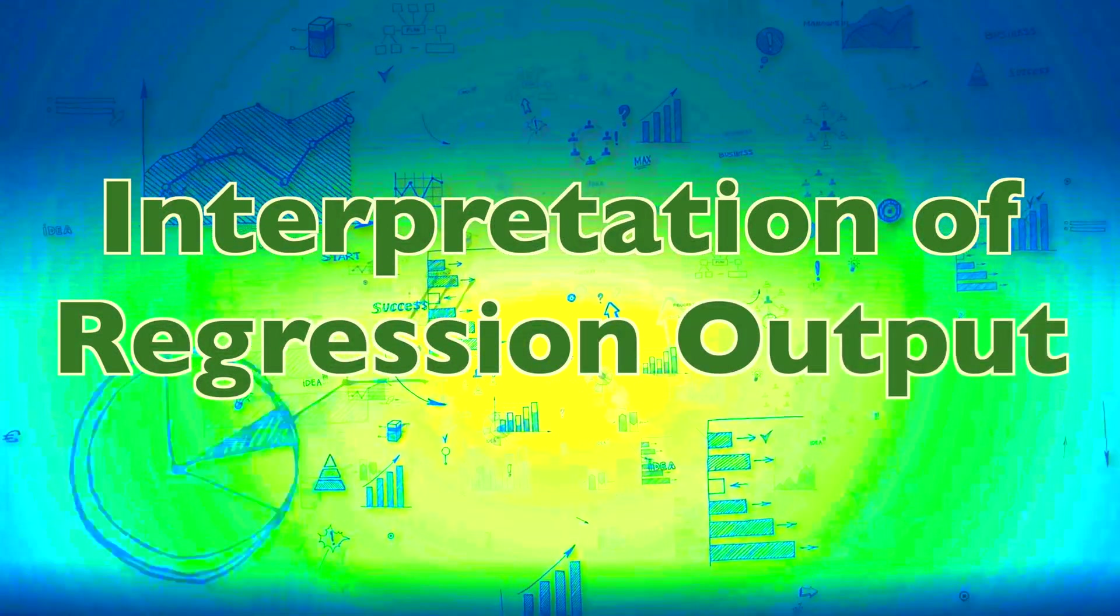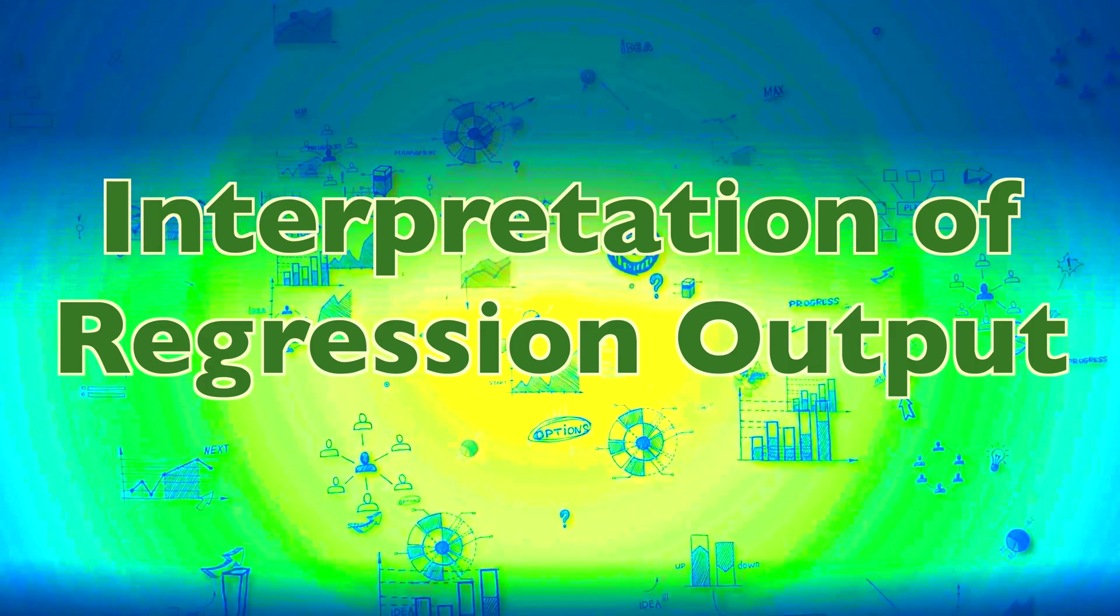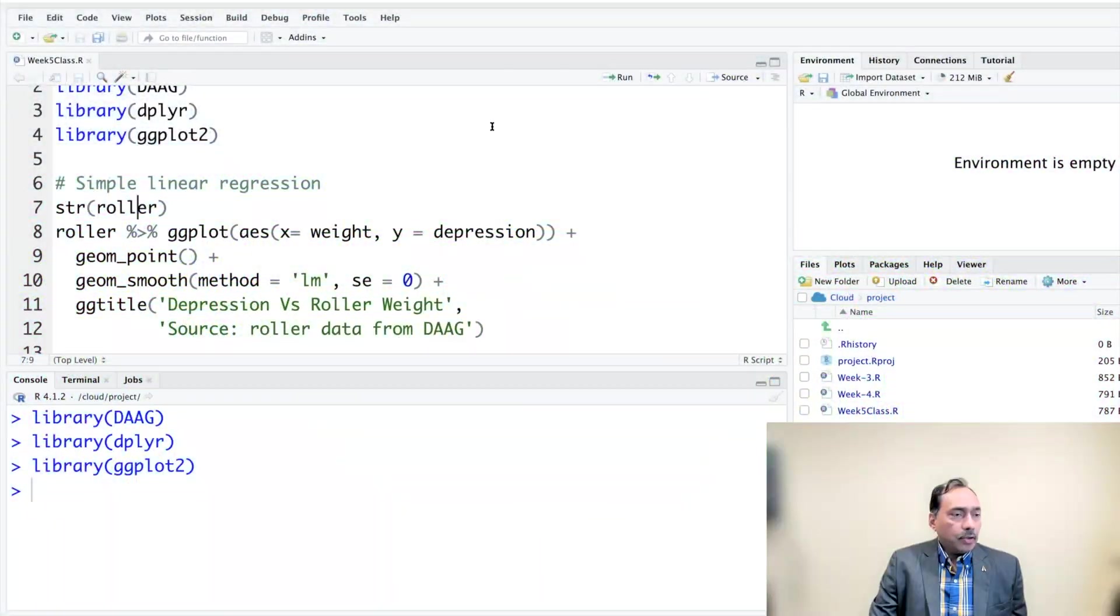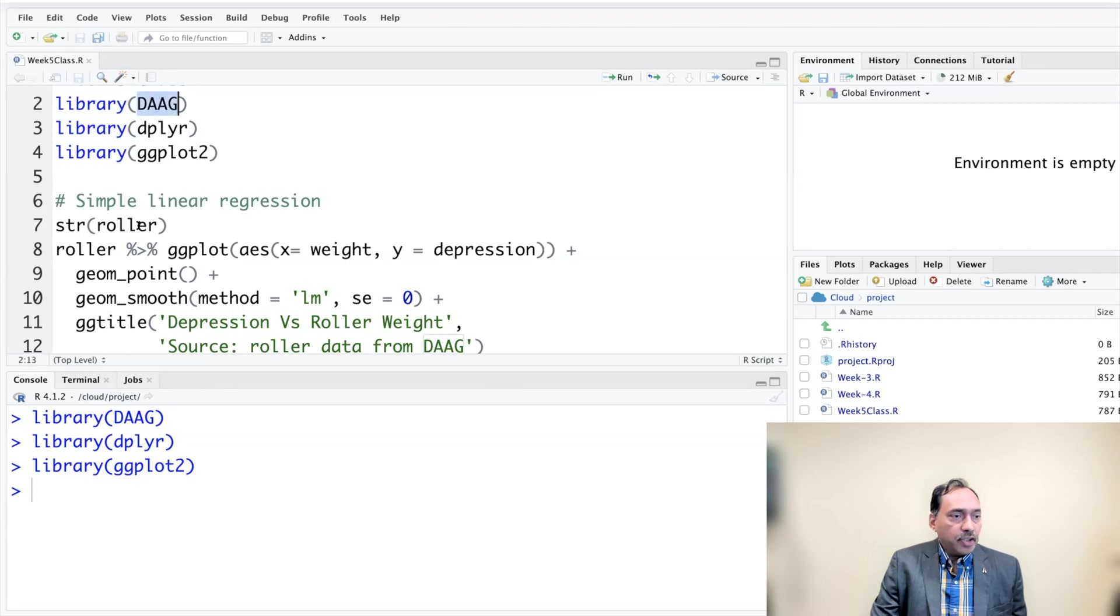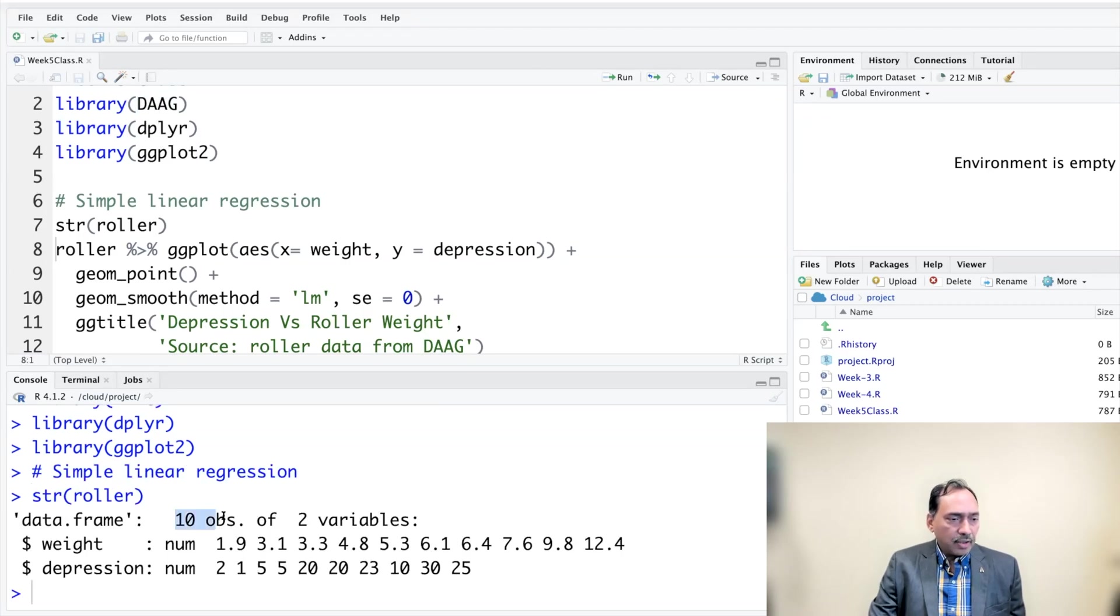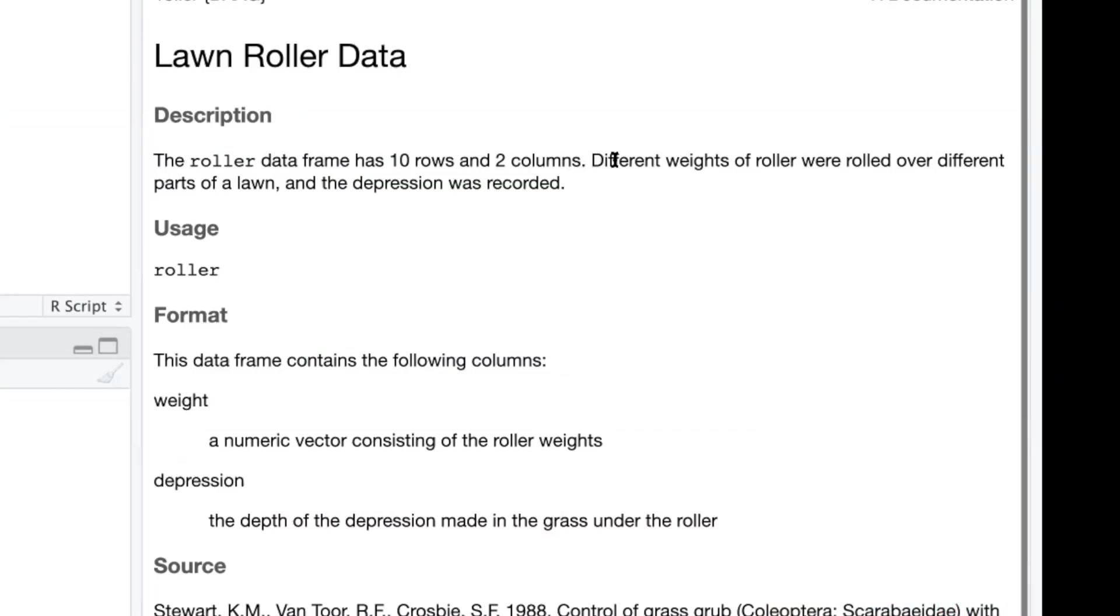The data we are using is roller data from the DAHE package. It has only 10 observations and there are only two columns: weight and depression. Different weights of roller were rolled over different parts of a lawn and the depression was recorded.